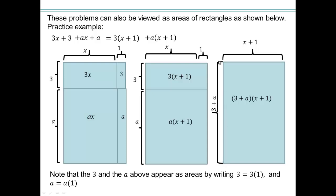So this is all (3+a) width, and this is x and 1, so (x+1). So the area of this big rectangle is (3+a) times (x+1).